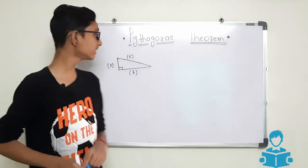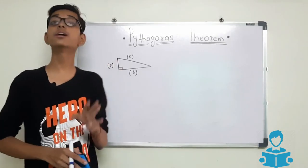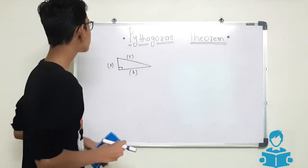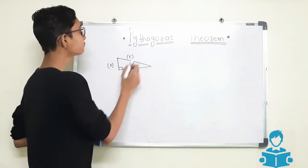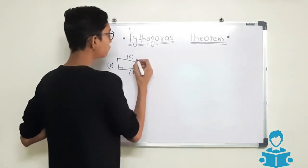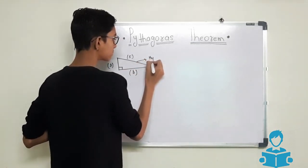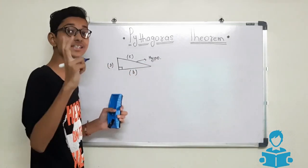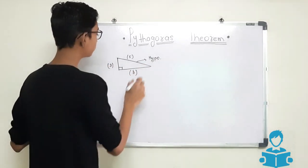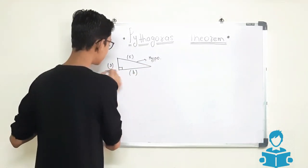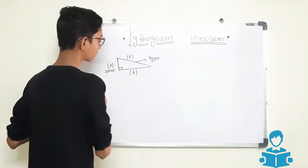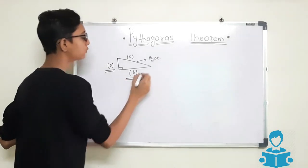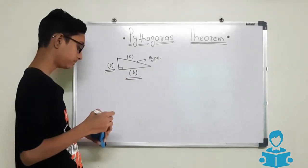Now, here we have three conditions. In the first condition, we have to find the value of hypotenuse. In the second condition, we have to find the value of A. And in the third condition, we have to find the value of B.